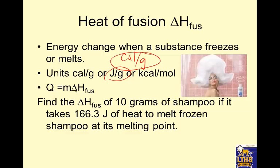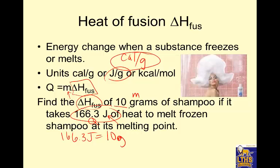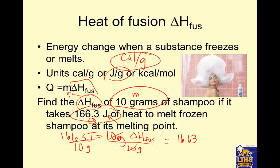There's an equation that uses heat of fusion, and it all depends on the mass. If we're looking for the heat of fusion and we have 10 grams of shampoo, and it takes 166.3 joules of heat to melt it at its melting point, what is the heat of fusion? Joules is a unit of heat, so that's our Q. So 166.3 joules equals the mass (10 grams) times the heat of fusion. We divide both sides by 10 grams and find that it's 16.63 joules per gram — a valid unit for heat of fusion.